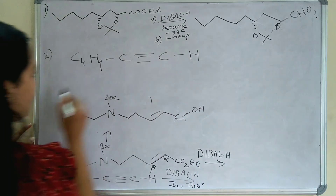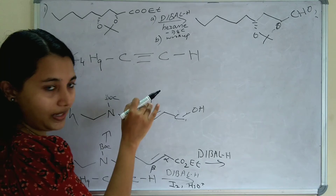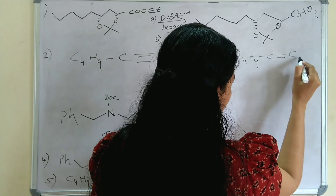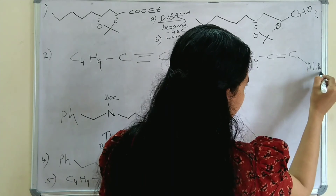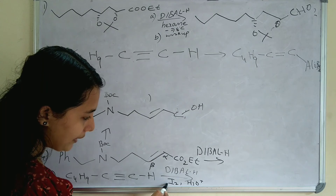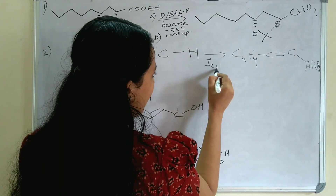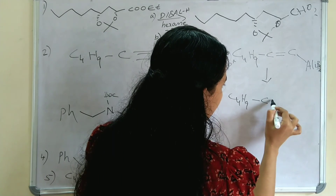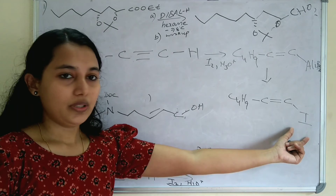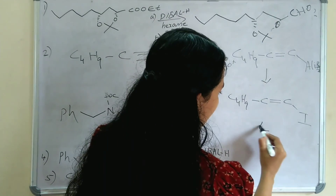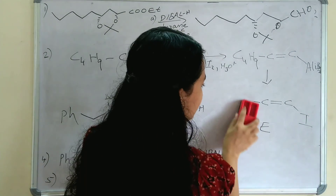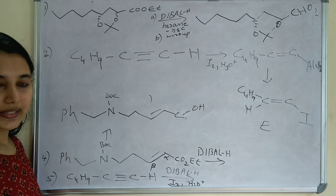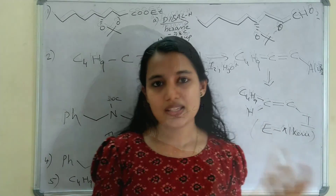The fifth example shows an alkyne: C₄H₉–C≡C–H. When DIBAL-H is added to this alkyne, we get an E alkene — C₄H₉–CH=CH with aluminium isobutyl added across the triple bond. Then with I₂ and H₃O⁺ workup, a substituted E alkene is formed with iodine substituted in place of aluminium. So this gives a stereospecific E vinyl iodide product.